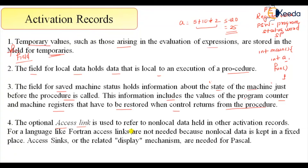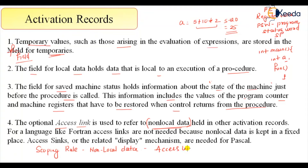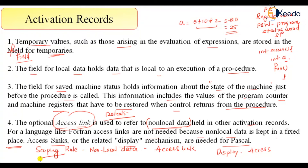The optional access link refers to non-local data. The key question is: can we access non-local data? This is governed by the scoping rule. If the data is within the accessible range, we create a link or pointer called the access link of the activation record. For example, in Fortran, access links are needed because non-local data is kept in a fixed place. Access links are also related to the display mechanism used in Pascal.